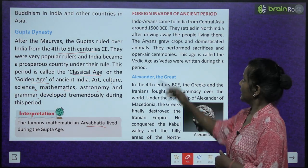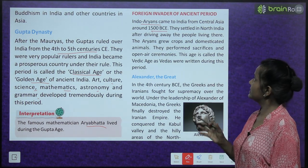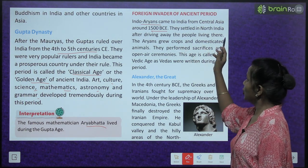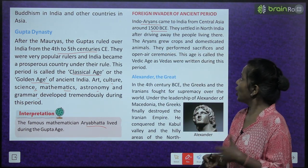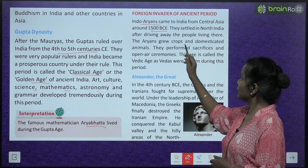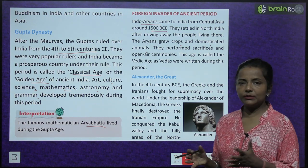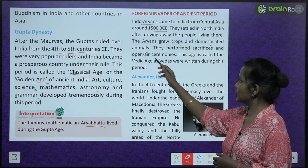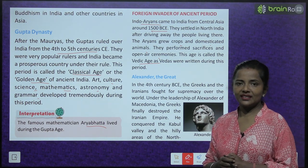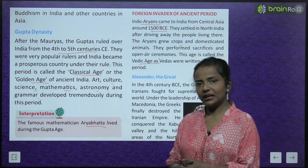Foreign invaders of the ancient period — Indo-Aryans came to India from Central Asia around 1500 BCE. They settled in North India after driving away the people living there. The Aryans grew crops and domesticated animals. They performed sacrifices and open-air ceremonies. This age is called the Vedic Age, as the Vedas were written during this period.